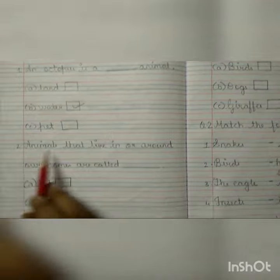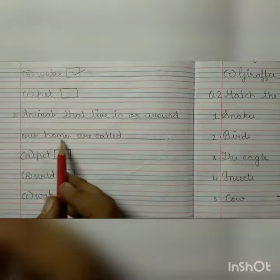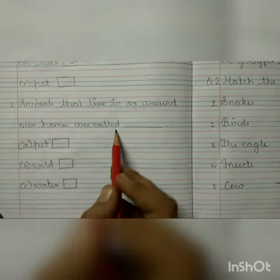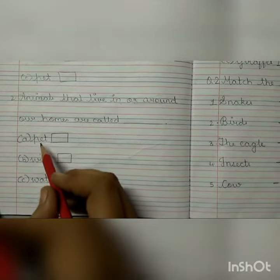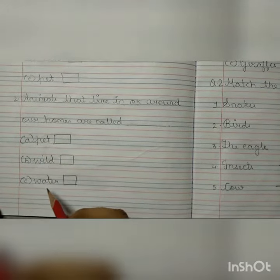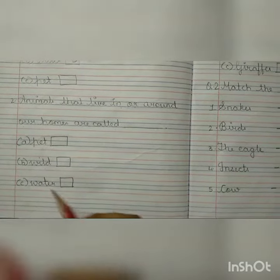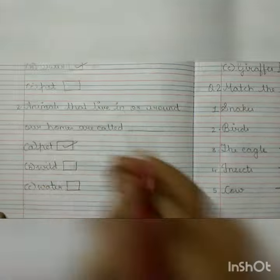Number 2. Animals that live in or around our homes are called dash. Options are pet, wild, water. The answer is pet.